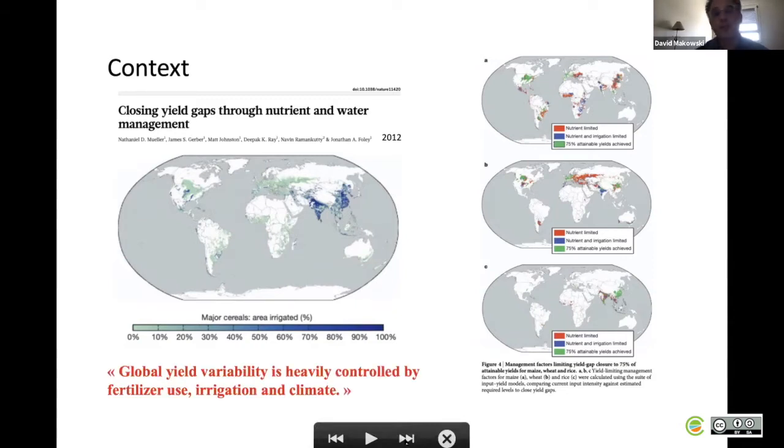The conclusion of the paper is that the global yield viability is easily controlled by fertilizer use and irrigation in climates throughout the world.